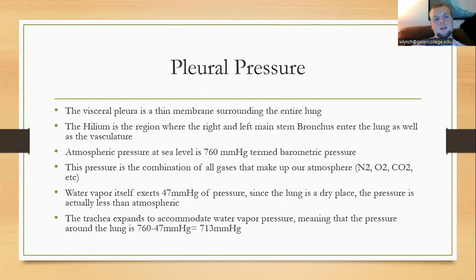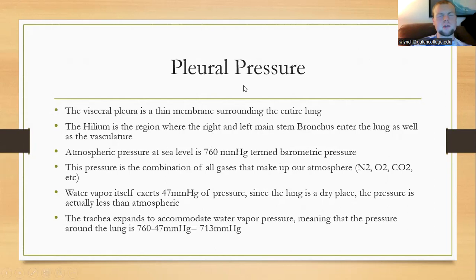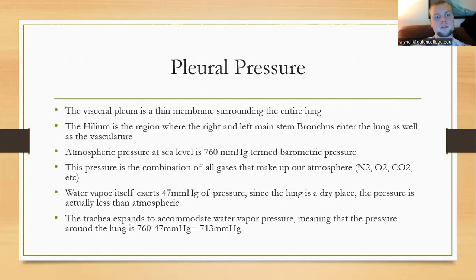The pleural cavity contains visceral pleura surrounding the lung and parietal pleura lining the chest wall. The hilum is where the right and left main stem bronchus enter the lung. Atmospheric pressure is 760 mmHg at sea level — a combination of all gases in the air, each with a partial pressure. Water vapor dissolved in the atmosphere constitutes 47 mmHg of pressure. Since the lung is dry, usual lung pressure is about 713 mmHg when subtracting water vapor pressure.